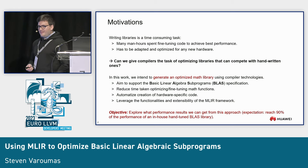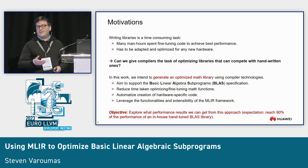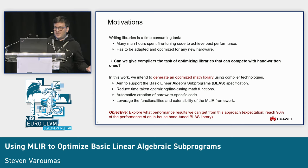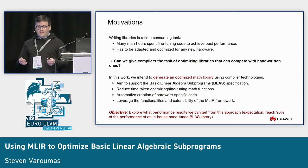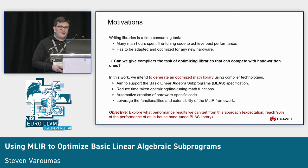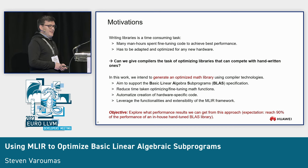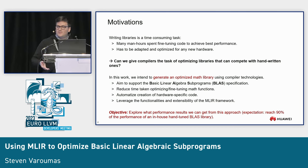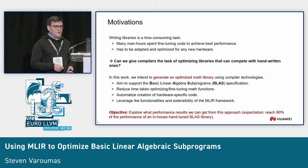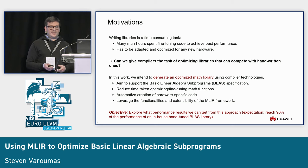The question we ask ourselves — and many people have in the past as well — is: can we give compilers the task of doing this optimization to generate optimized libraries that can compete with handwritten libraries? This is what we intend to do in this work, by generating an optimized math library using compilers, aiming to support the BLAS API, and to do this while reducing time spent fine-tuning math functions and optimizing hardware-specific code, by leveraging the functionalities of MLIR.